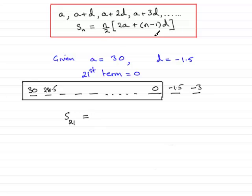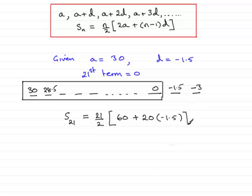All I need to do is use this formula to get that largest value. So it would be 21 over 2, multiplied by twice the first term — 2 lots of 30 which is 60 — plus n minus 1, so with n as 21 that's 20 times the common difference minus 1.5. Working this out: 20 multiplied by minus 1.5 is minus 30; add it to 60 gives 30; and 30 times 10.5 gives 315.